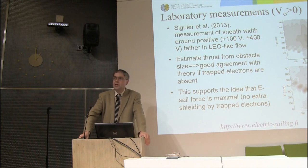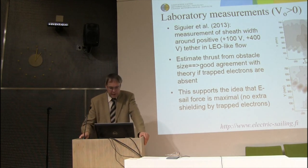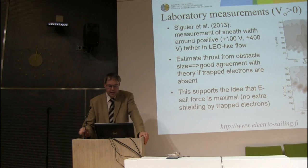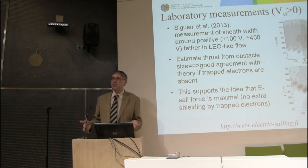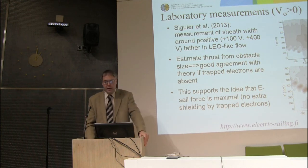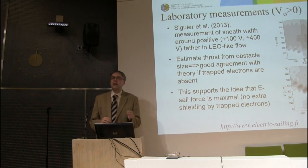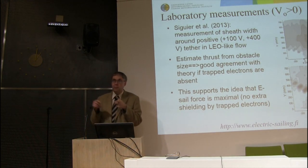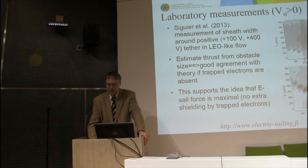That was simulation and theory, but nowadays there are also relevant laboratory measurements of this phenomenon — made by people at Onera. Ziguer et al. published a paper last year where they put a charged tether into flowing plasma, mimicking ionosphere conditions, using relatively low voltages like 100 and 400 volts. They mapped the sheath structure around the wire by moving a small Langmuir probe in the plane perpendicular to the tether.